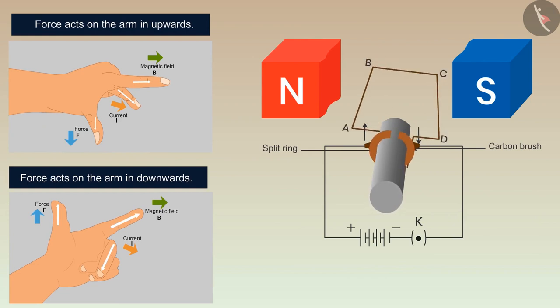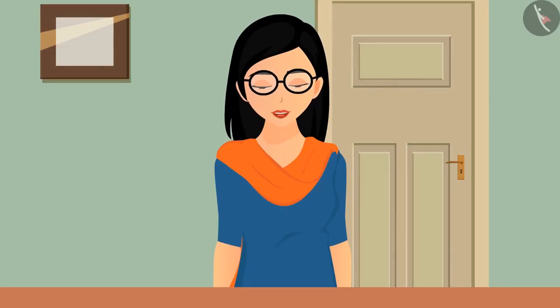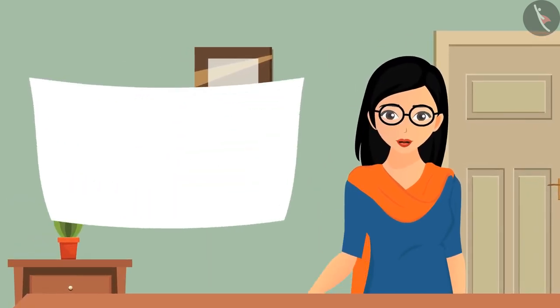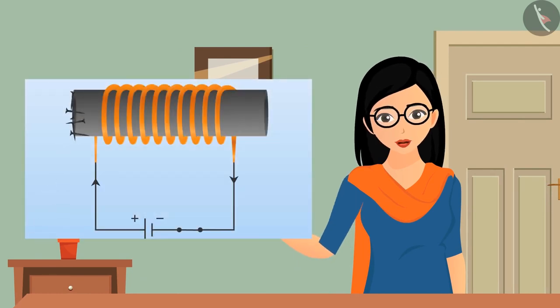After half the cycle, the force acted on CD and AB in downwards and upwards direction respectively and the cycle repeats itself. Commonly in electric motors, electromagnets are used in place of magnets. Electromagnets can be formed by putting a soft iron core in the coil. This we have already covered in a previous video.